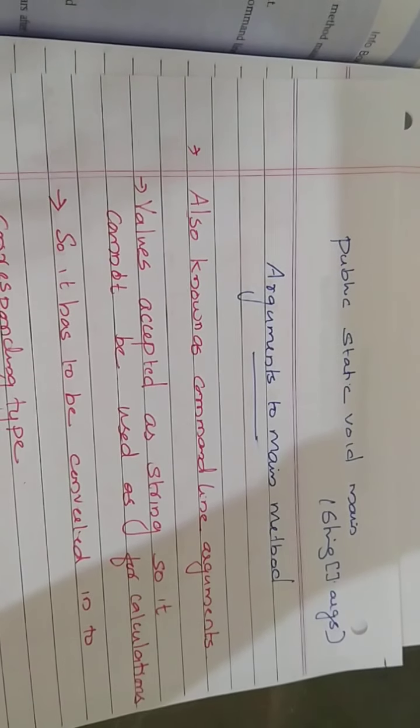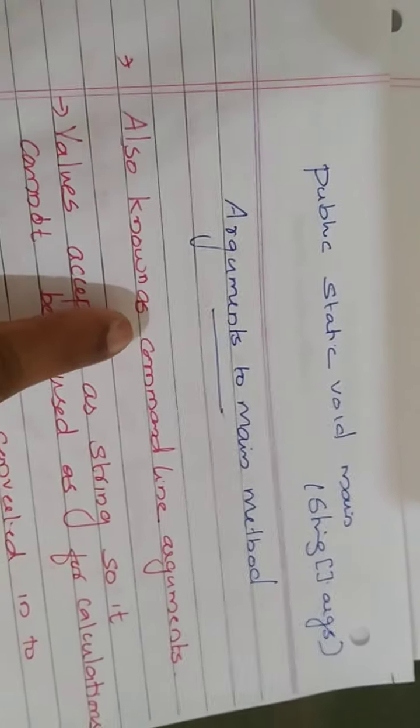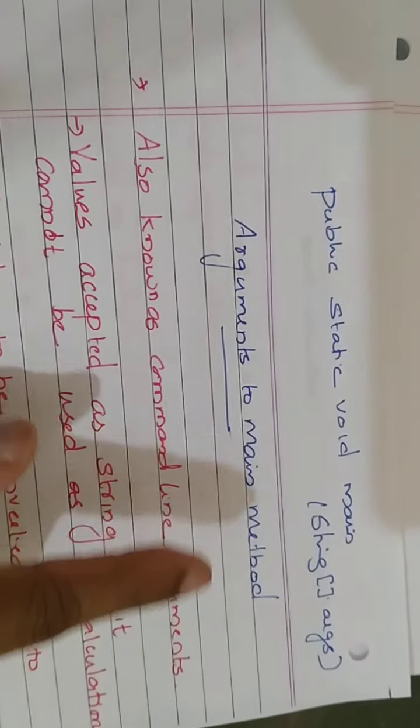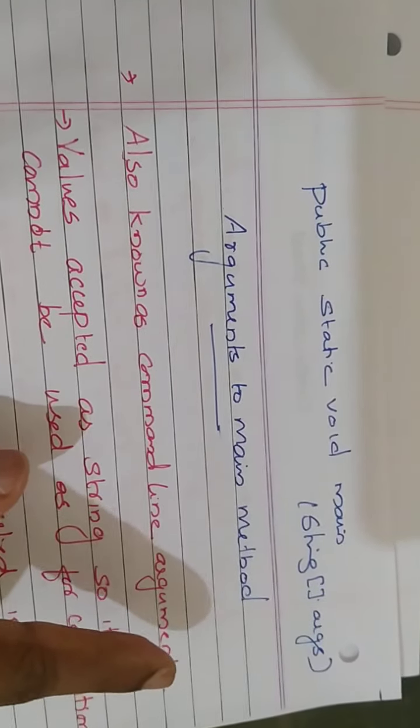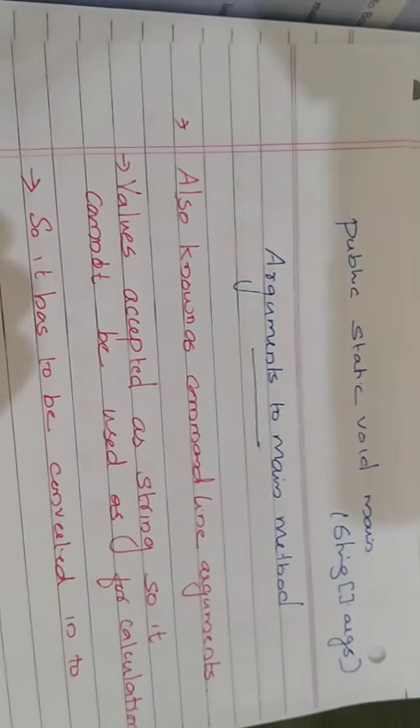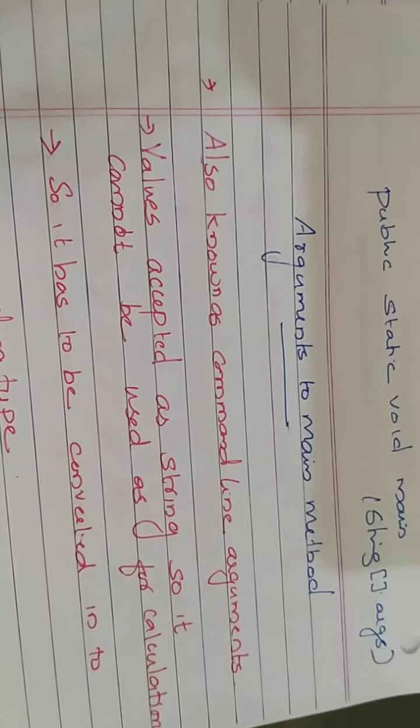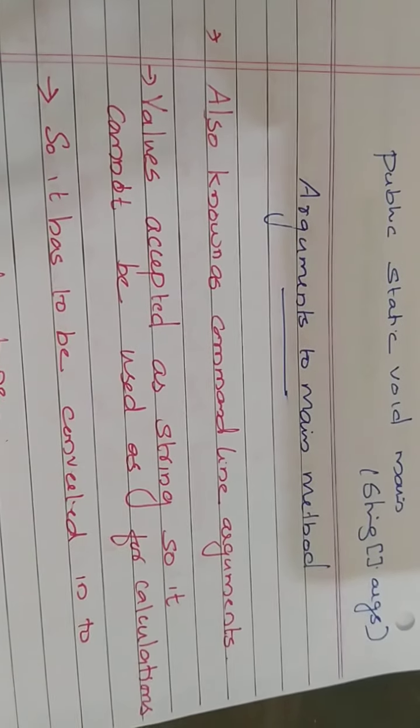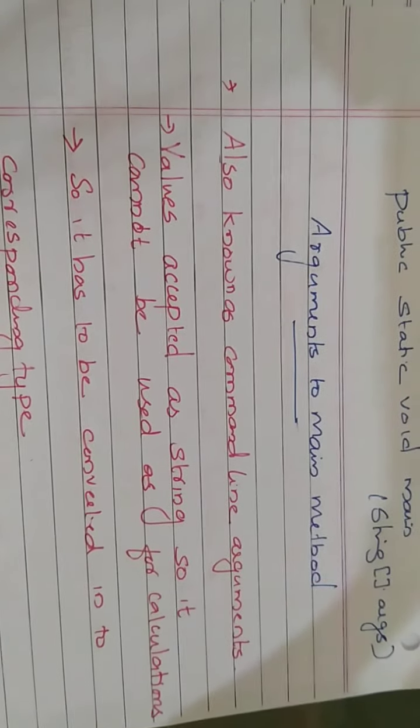We will discuss the array chapter later — you have a separate chapter for arrays, so no need to worry about it now. Just understand that in the main method, String[] args means args is an array of type String. Arguments to the main method are also known as command line arguments. The arguments which we pass through the main method are known as command line arguments.